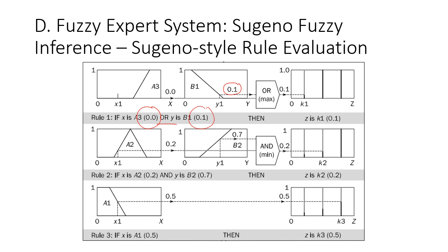So 0.1 will be mapped to k1. For rule two, because this is an AND operation, we evaluate the minimum value, and the minimum value is 0.2, mapped to k2. For rule three, it is mapped directly to k3 with the value of 0.5.